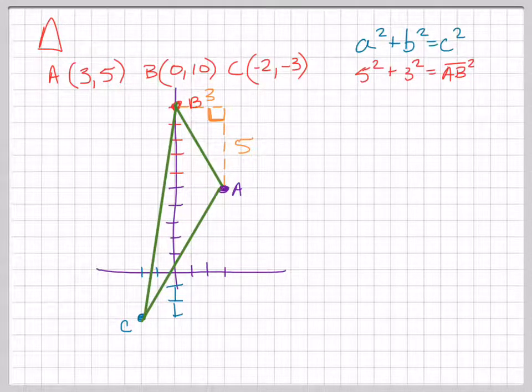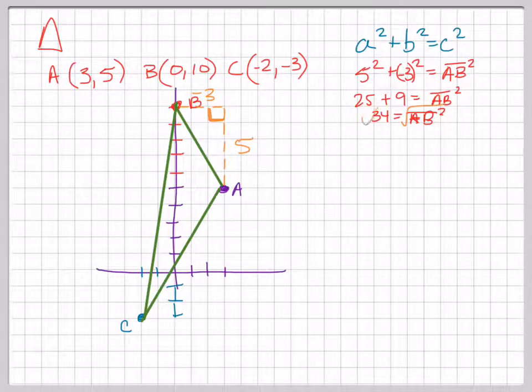Now you might say, you went up 5, but it's to the left 3, so shouldn't it be negative 3? Even if I made it negative 3 squared, what happens when I square negative 3? Negative 3 times negative 3 is positive. So it doesn't matter if these are positive or negative. So 25 plus 9 equals segment AB squared, which is going to be 34 equals AB squared. I don't want AB squared, I just want AB, so I take the square root. So line segment AB is the square root of 34.